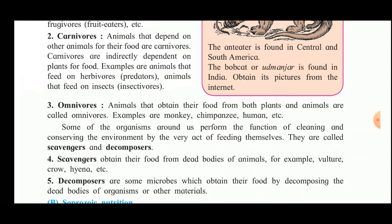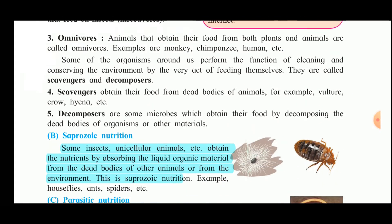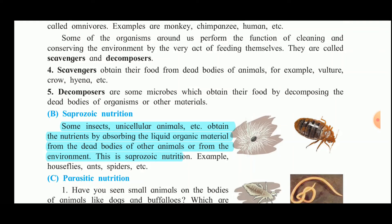Some organisms perform the function of cleaning and conserving the environment through their act of feeding — they are called scavengers and decomposers. Scavengers obtain food from the dead bodies of animals — for example, vultures, crows, and hyenas. Decomposers are microorganisms that obtain their food by decomposing the dead bodies of organisms or other organic material.